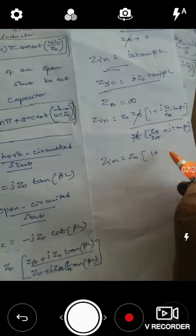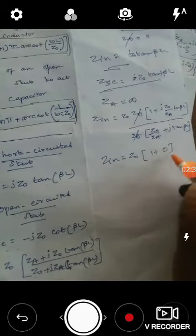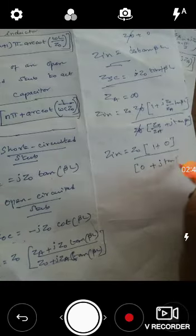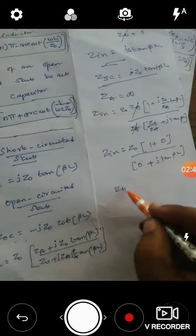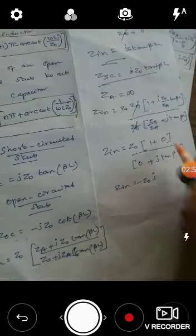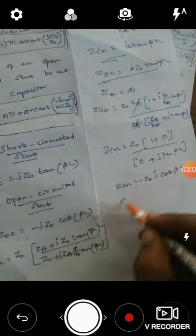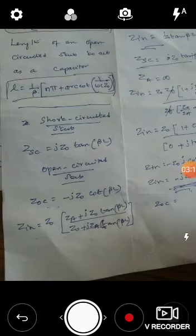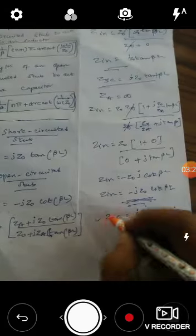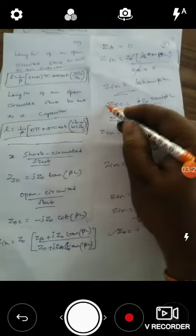Substituting Z_L equal to infinity for the open-circuited line, the terms with Z_L in the denominator go to zero. You get zero in the numerator's Z_L term, leaving j·tan(βl) in the denominator. Bringing j to the numerator gives minus j, and one divided by tan(βl) is cot(βl). So Z_in for the open-circuited stub equals minus j·Z0·cot(βl).